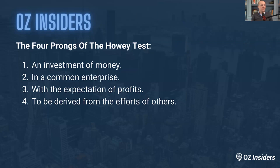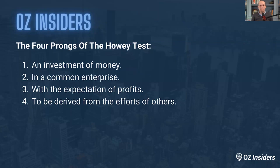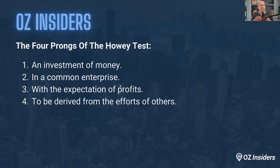There are four prongs of the Howey test. If you're offering equity in an OZ deal to investors and it meets each of these four criteria, you have a security. The four criteria are: one, an investment of money; two, in a common enterprise; three, with the expectation of profits; and four, those profits are derived from the efforts of others. So if you're raising capital from an outside investor who writes you a check for $100,000, expecting you to run a business, you have a security.